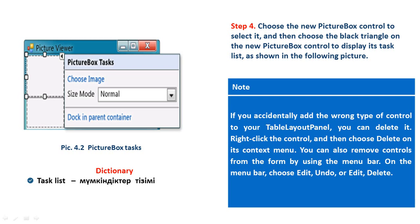Note: If you accidentally add the wrong type of control to your table layout panel, you can delete it. Right-click the control and then choose Delete on its context menu. You can also remove a control from the form by using the menu bar — on the menu bar choose Edit > Undo or Edit > Delete.